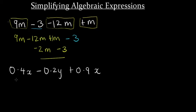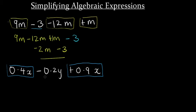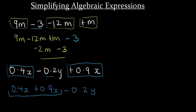The second example: 0.4x minus 0.2y plus 0.9x. The like terms are 0.4x and 0.9x, both having x as a variable. The 0.2y is an unlike term. Grouping the like terms: 0.4x plus 0.9x, then write back minus 0.2y. Adding the coefficients, 0.4 plus 0.9 gives us 1.3. The answer is 1.3x minus 0.2y.